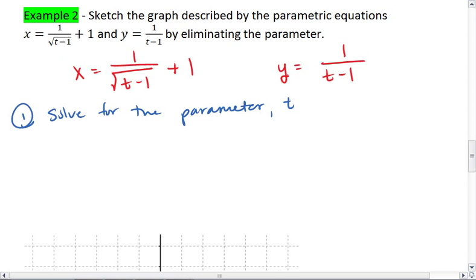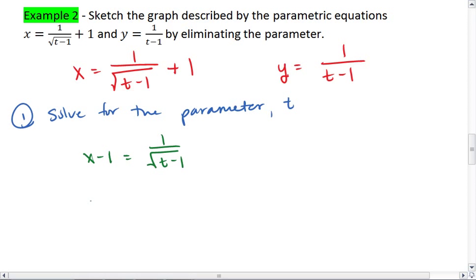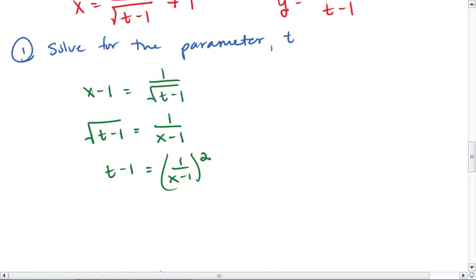So for our first equation, we're going to see that we have x minus 1 equals 1 over the square root of t minus 1. Square root of t minus 1 equals 1 over x minus 1. t minus 1 equals 1 over x minus 1 squared. So t equals 1 over x minus 1 squared plus 1. There's our x equation.